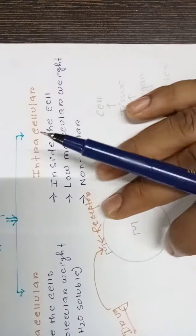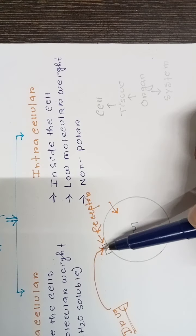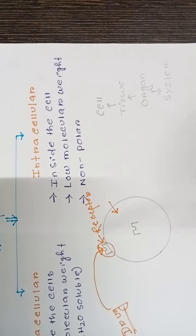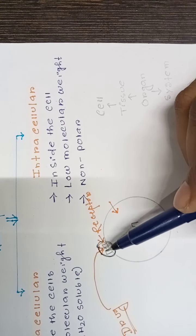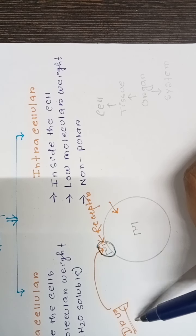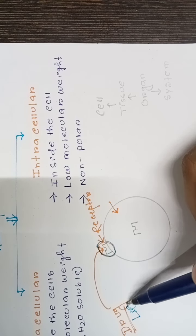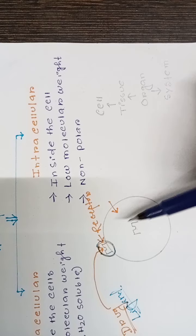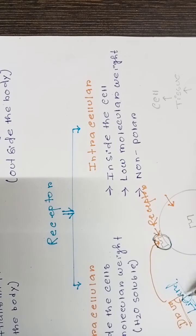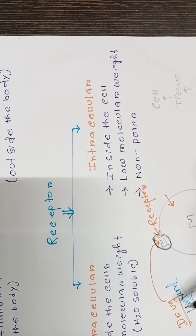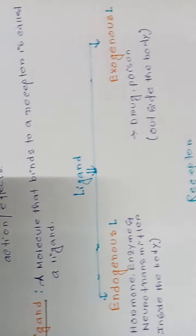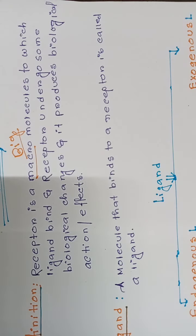The receptor undergoes some biological changes and produces a biological action. So the receptor is a macromolecule to which the ligand — the drug — binds. After binding, the ligand produces some biological action or biological changes. That is the overview of receptors and ligands.